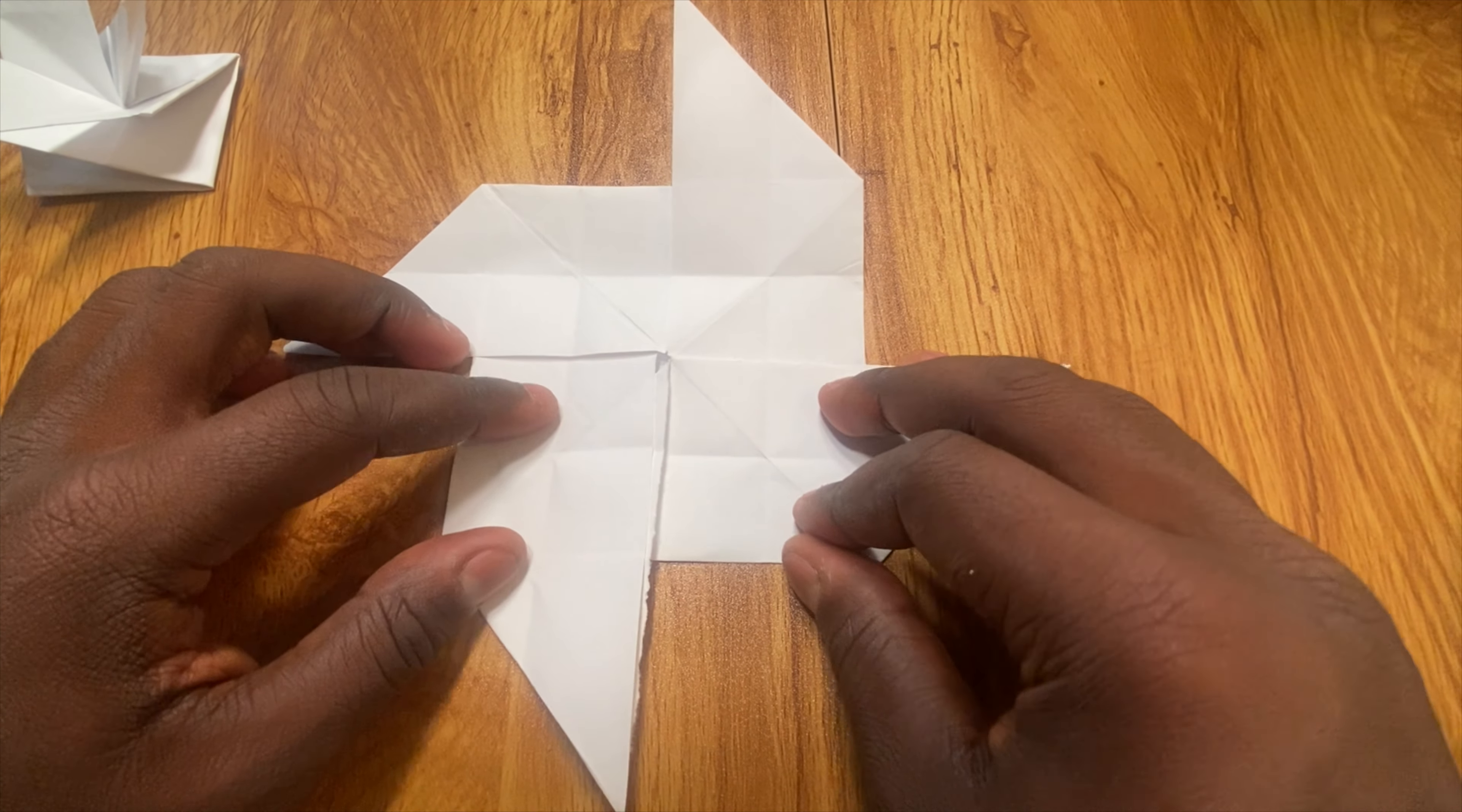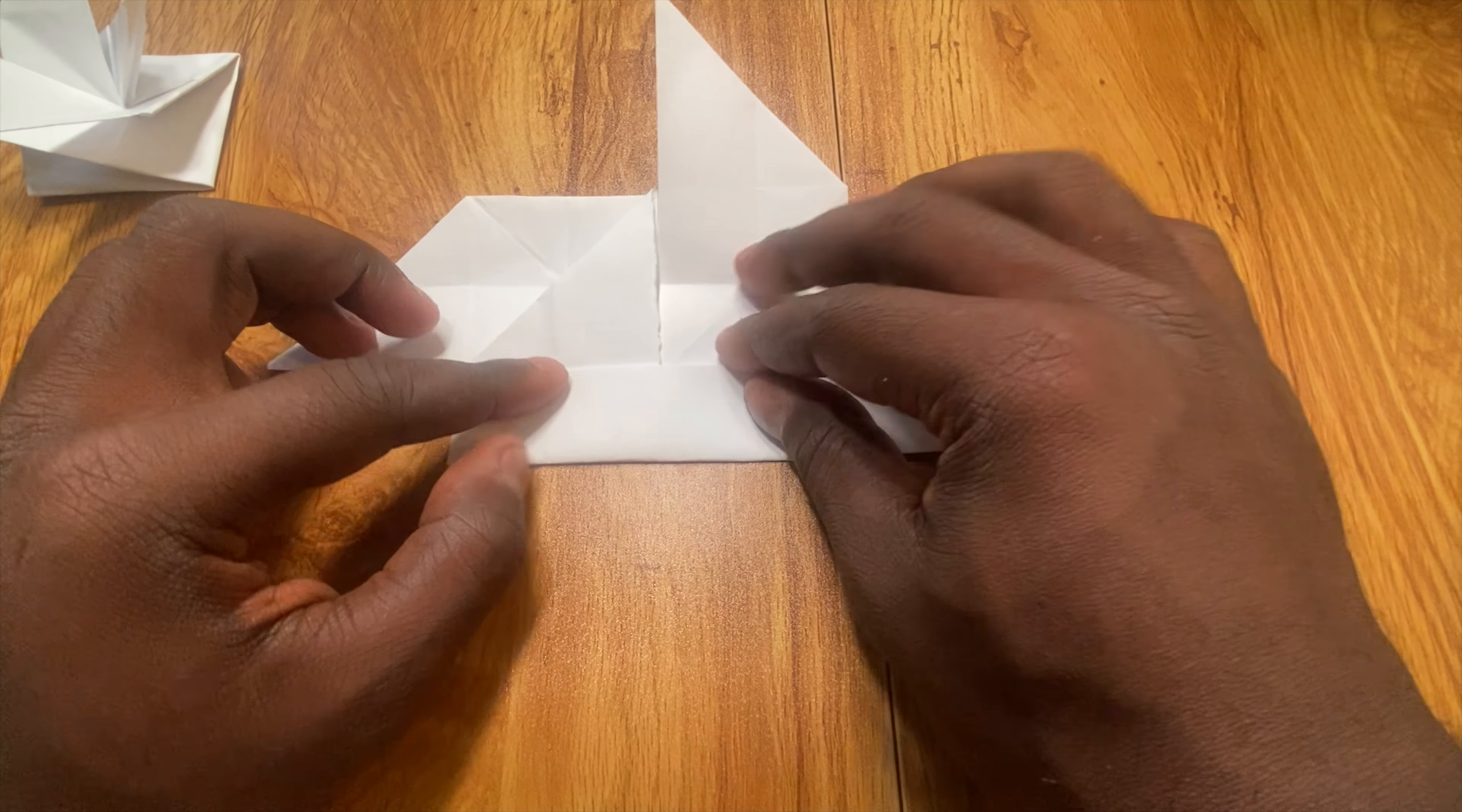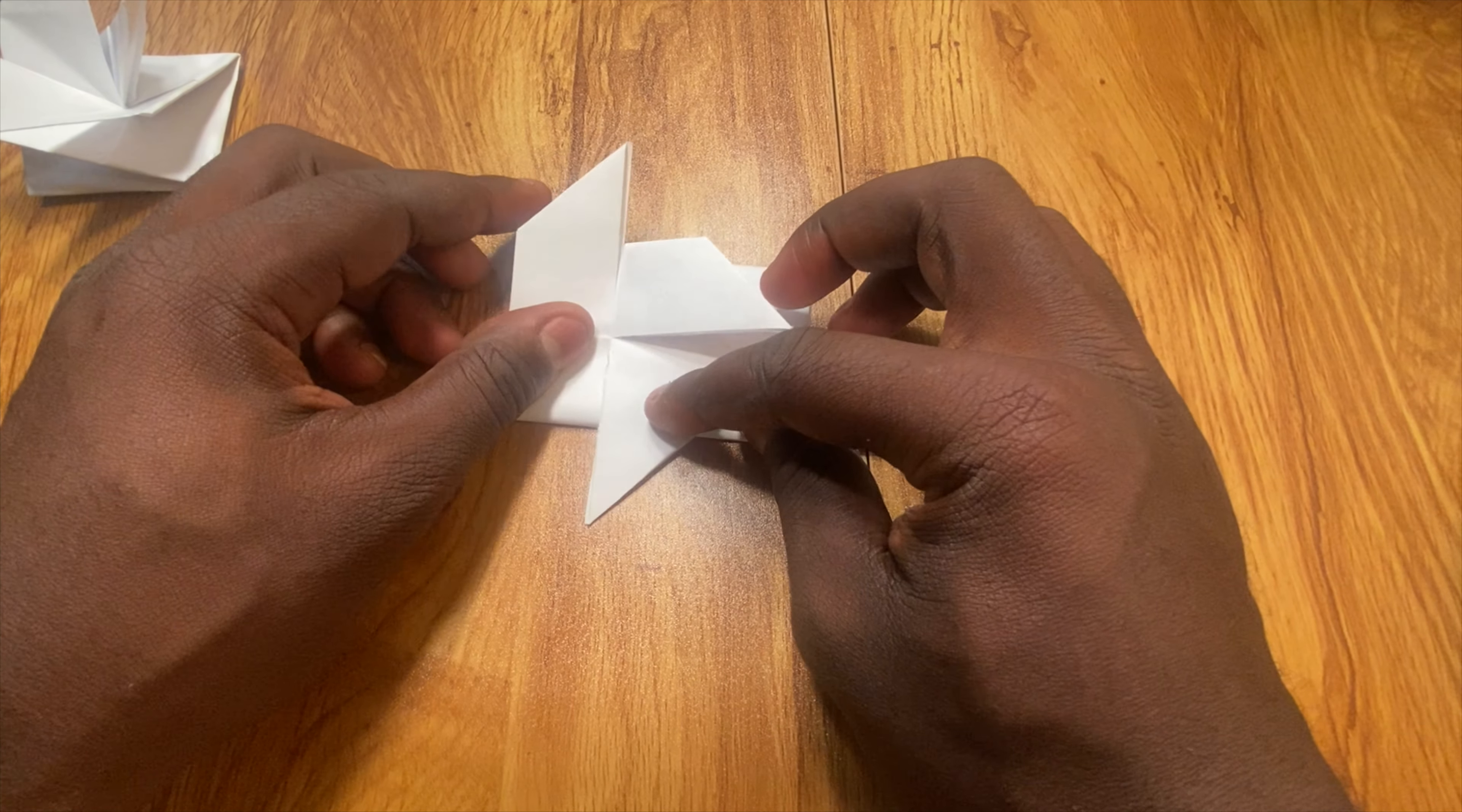All right, now our final step is essentially to create the spiral. And to make the spiral, the first step is to make your first fold, rotate, make your second fold, rotate, make your third fold, gently tucking it underneath this flap right here.